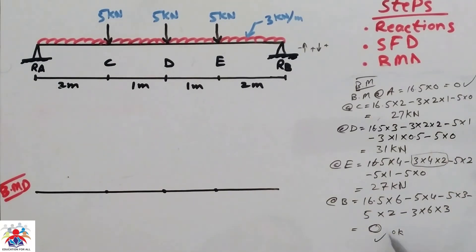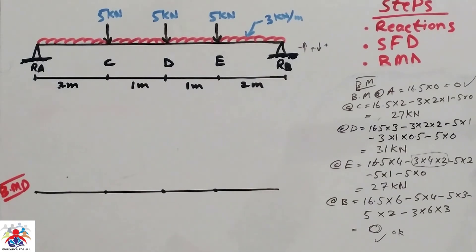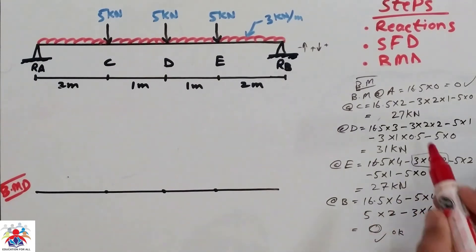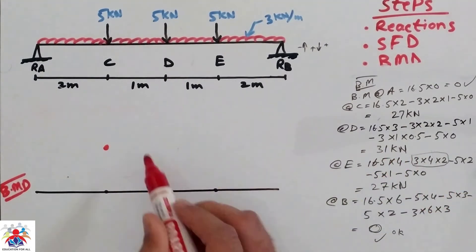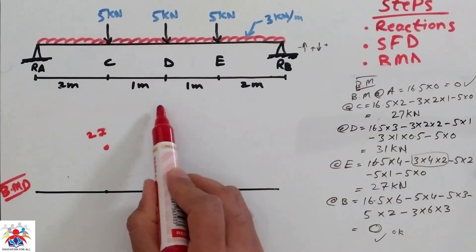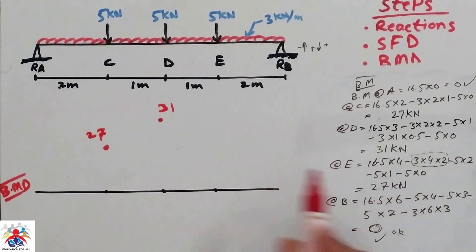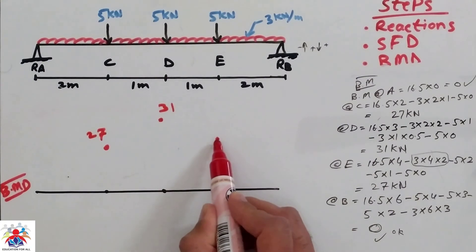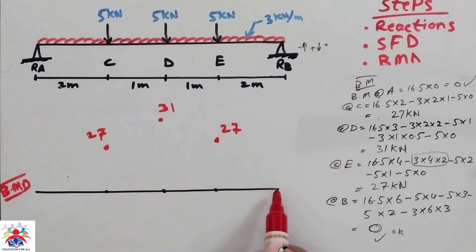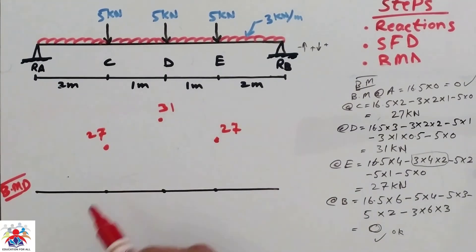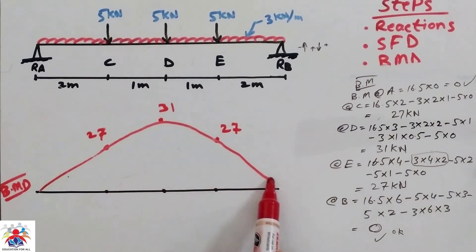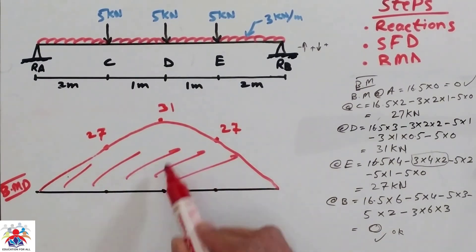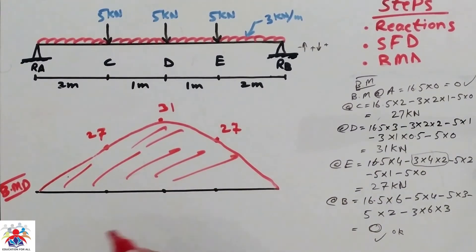We have 0 at the start and at the end, so our calculation is correct. Now we draw the bending moment diagram: point A is 0, point C is 27, point D is 31 (slightly above 27), point E is 27 again, and point B is 0. We connect these points with a parabolic line because of the UDL. That is how you draw your bending moment diagram. Thank you for watching — please don't forget to subscribe to my channel.